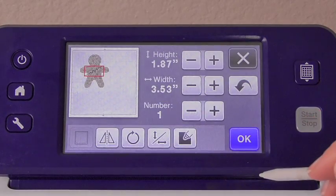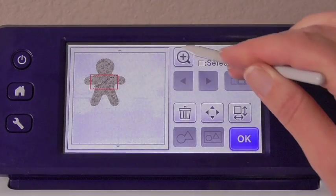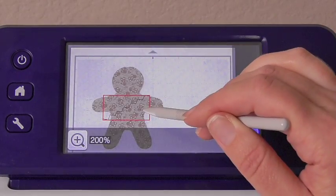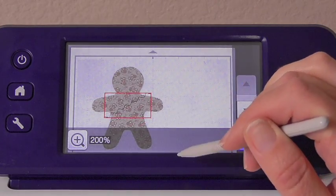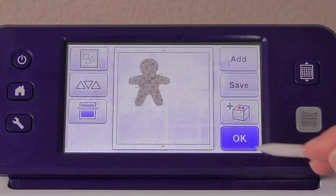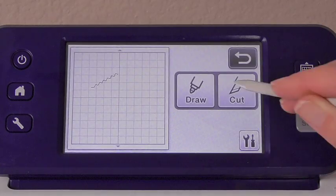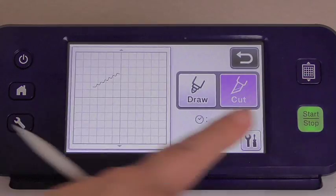And once that's in place hit OK, OK, and you can zoom in to help you with placement and then just click OK. And you'll just OK your way out to that cut screen and hit cut and start.